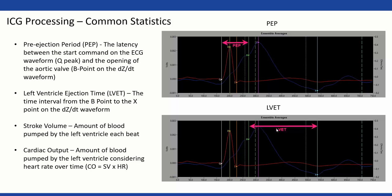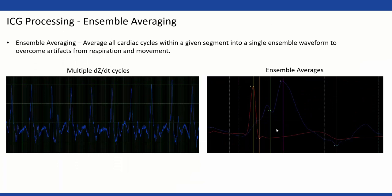With impedance, one thing we're going to do to make the data workable is take all of the individual cycles — shown here in blue — and average them all together into one ensemble average. This helps a lot with any movement artifact or respiration that might be affecting individual cycles. Going through every single cycle to edit would be very tedious, so this is a way to get the same information averaged together, where small changes are less important but the result is still powerful.